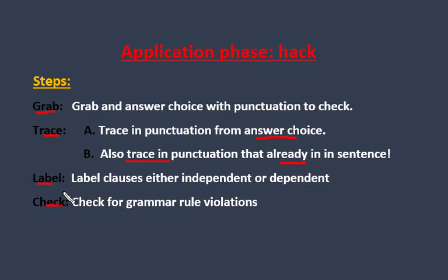Trace in the punctuation that's already in that sentence. Once you do that, we're going to simply label the clauses — either independent or D for dependent. Then what we do is check for violations of the grammar rules. Let's go ahead and look at some working examples.